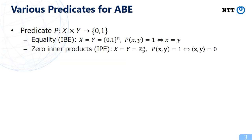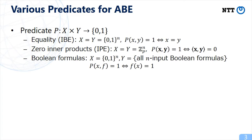Inner product encryption is also a well-known class of ABE, in which x and y are vectors and x and y satisfy P when vector x and vector y are orthogonal. In ABE for boolean formulas, x is an n-bit string and y is an n-input boolean formula, and x and f satisfy the predicate P when f(x) equals 1.